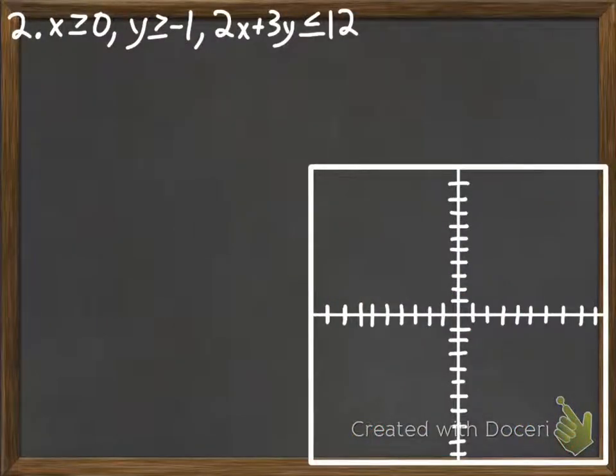And then we have the last example here. And the last example has three inequalities, but it's the exact same idea. Graph them all, shade them all, and then see where all three overlap. So go ahead, pause the video, and work this through now.